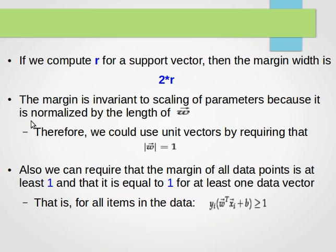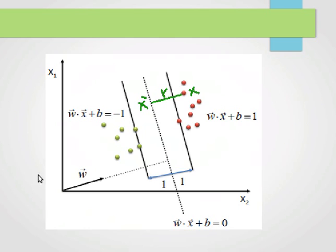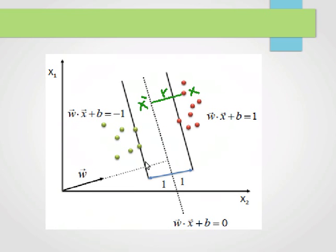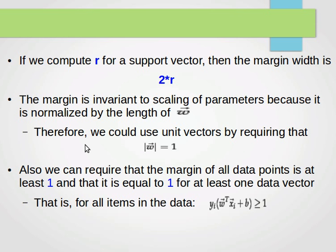If we compute r for a support vector, the total margin width is 2r — twice that distance. So compute the distance between the two support vectors and the total margin will be twice that distance. Bear in mind that the margin is invariant to scaling of parameters.